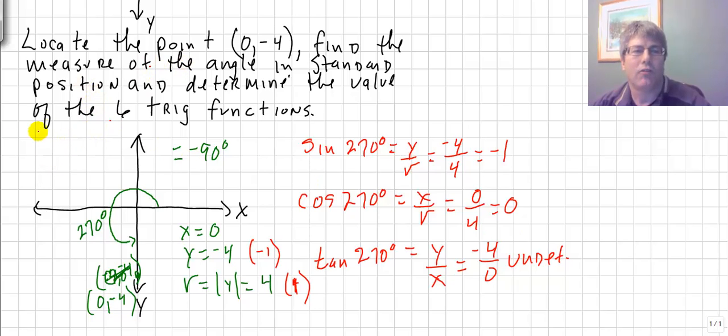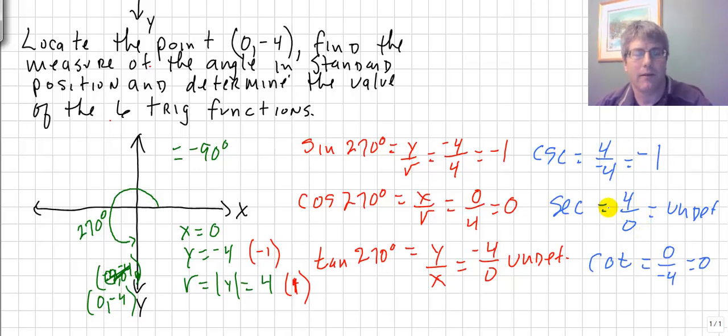And then for our reciprocal functions, our cotangent, of course, is going to be just the reciprocal of that negative 4 over 0, so 0 over negative 4 is 0. Now, the secant, the reciprocal of 0 over 4 is undefined, and you're going to see the pattern here. And the cosecant, of course, would then be 4 over negative 4, so that also is negative 1.